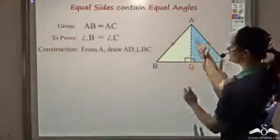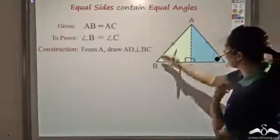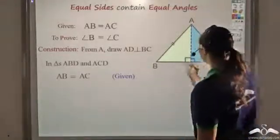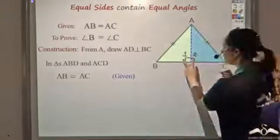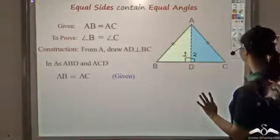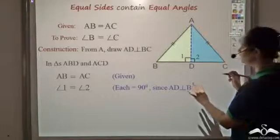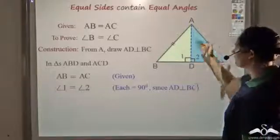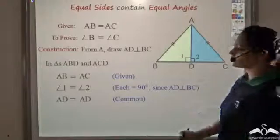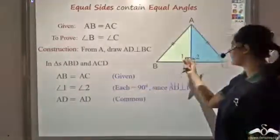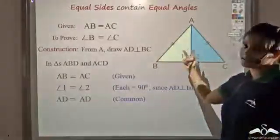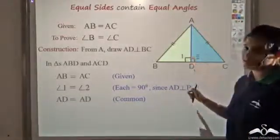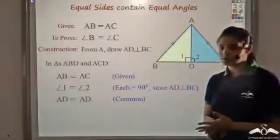Let us call this point D, and say AD is perpendicular to BC. Now in these two triangles, ADB and ADC: first, AB is equal to AC. Second, angle 1 is equal to angle 2, each being 90 degrees. Third, AD is being shared by both triangles — it is common to both, so AD is equal to AD. So now I have a side, a right angle, and the hypotenuse. AB and AC are the hypotenuses. So these two triangles are congruent by RHS — right angle, hypotenuse, and one side.